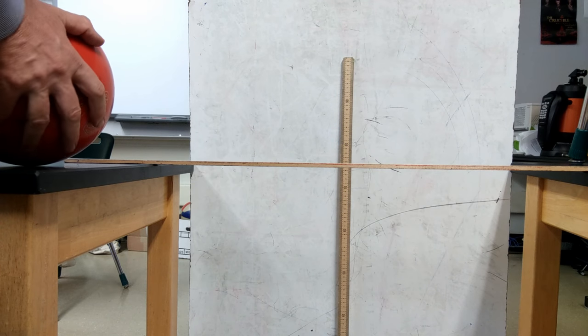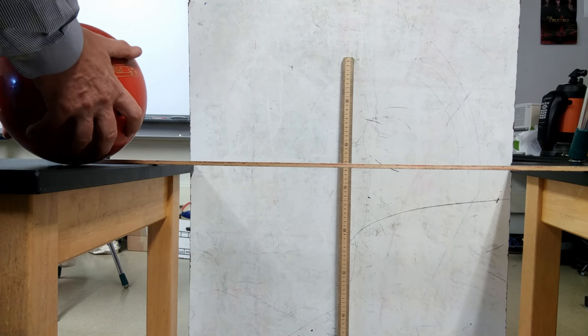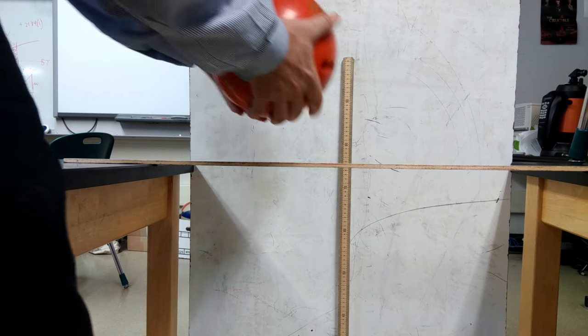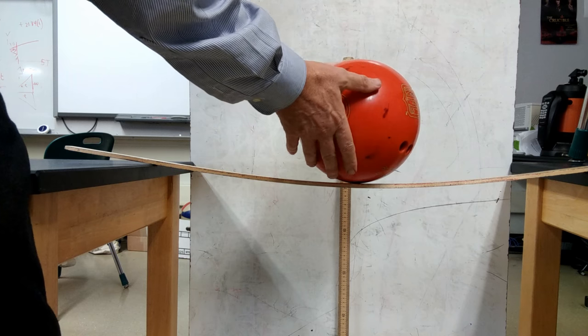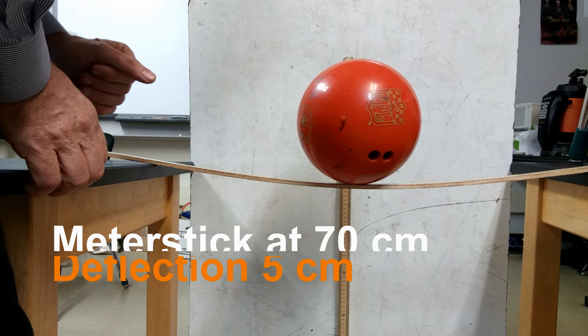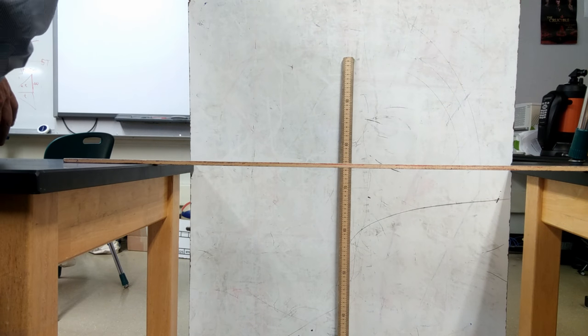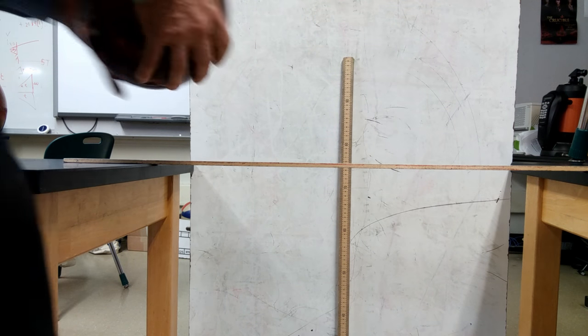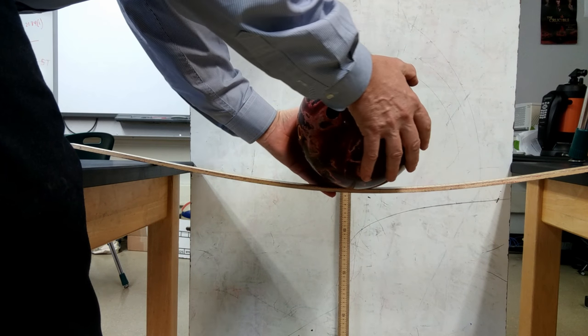So let's take a look at taking this bowling ball and putting it on a meter stick here instead of the table. You'll notice the meter stick bends a bit, and when we put a little heavier ball on it, you